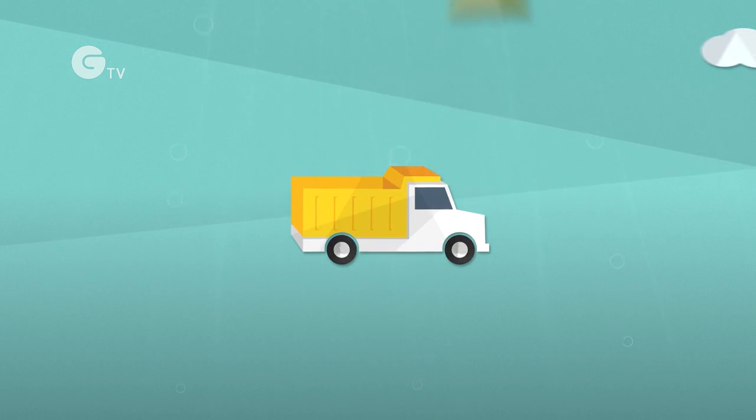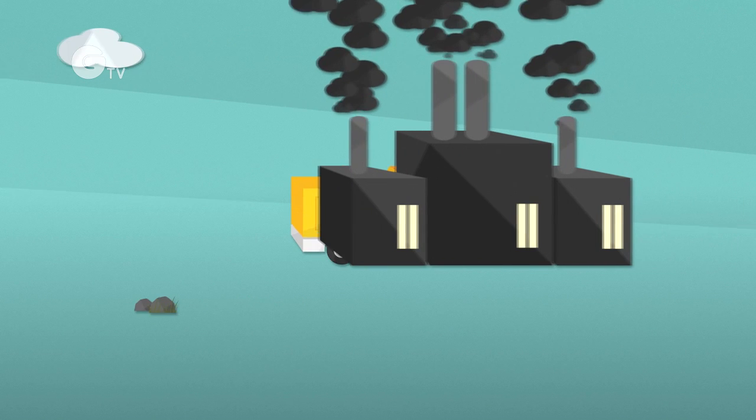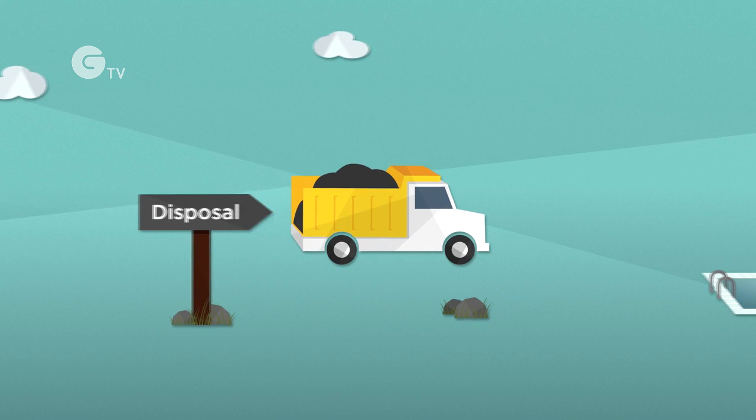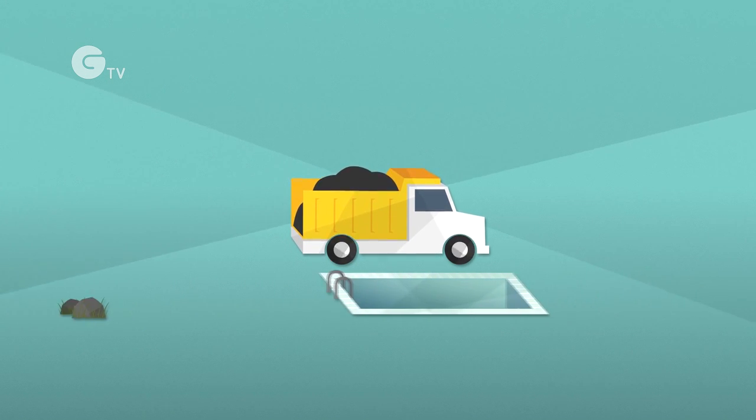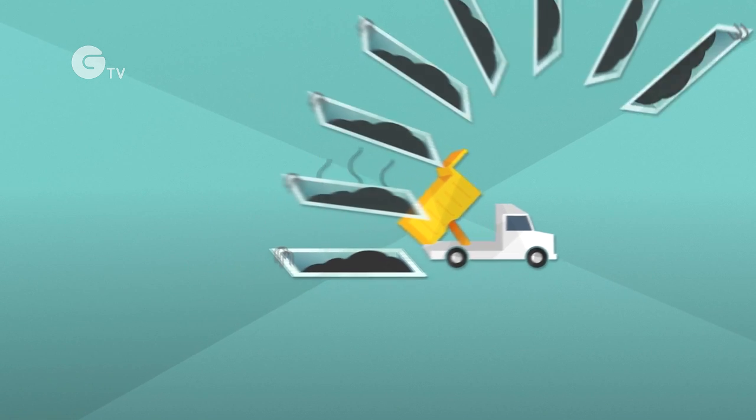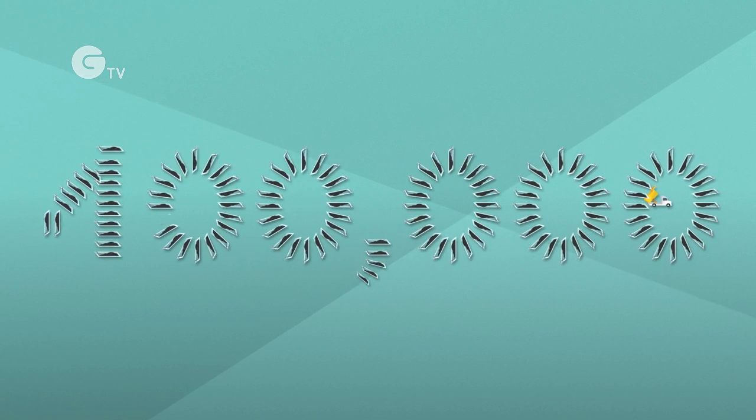And even after coal is burned, the waste that's left over is bad for our health. Each year, coal plants generate more than 140 million tons of toxic waste called coal ash that's stored in thousands of pits across the country. Enough toxic waste to fill more than 400,000 Olympic-sized swimming pools.